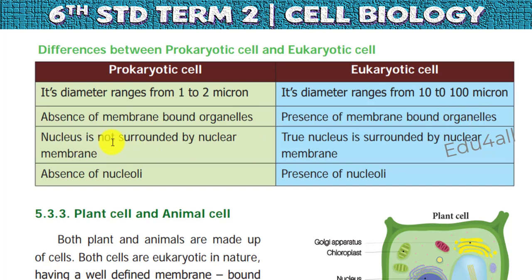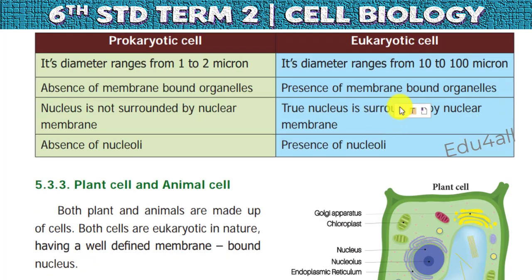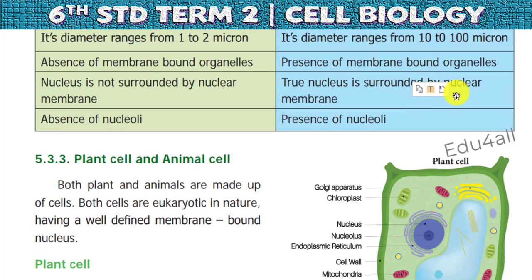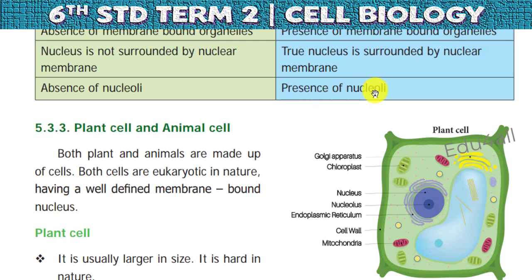In prokaryotic cells, the nucleus is not surrounded by a nuclear membrane, and chromosomes are not enclosed within a nucleus — there is an absence of nucleoli. In eukaryotic cells, the nucleus is surrounded by a nuclear membrane, chromosomes are present inside the nucleus, and nucleoli are present.